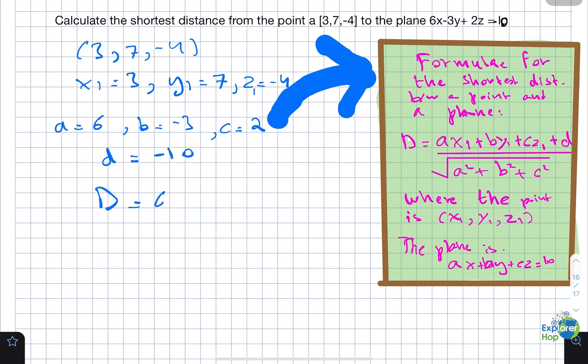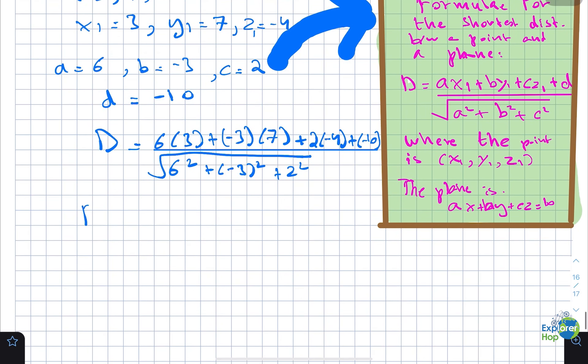D equals 6 times 3 plus minus 3 times 7 plus 2 times minus 4 plus minus 10, all divided by the square root of a squared plus b squared plus c squared.